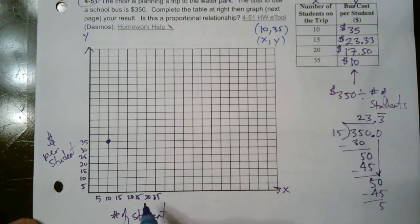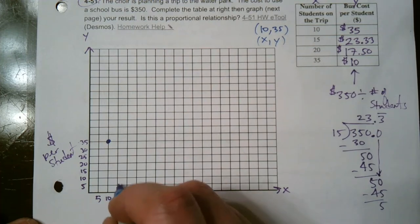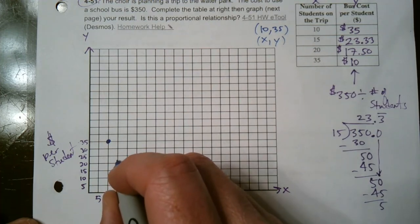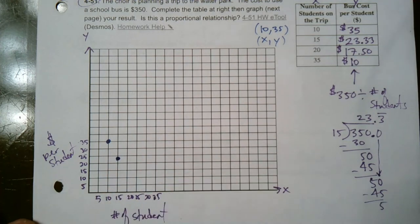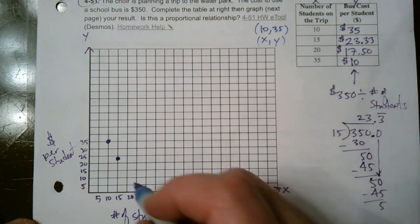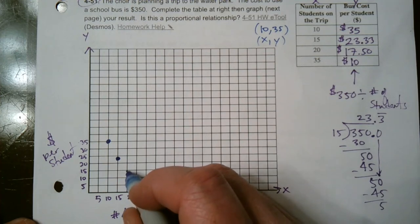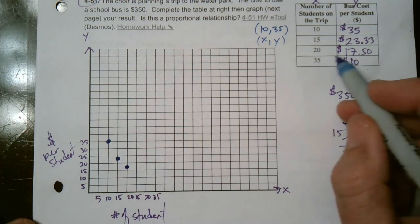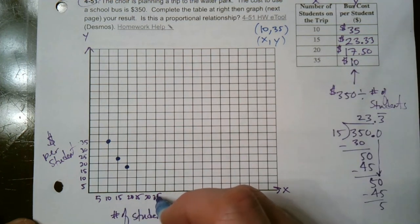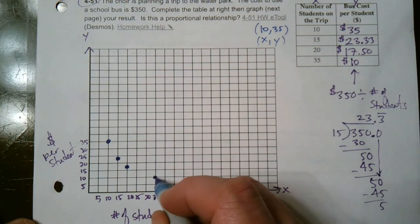So then what about 15, 23.33? So 15 and then 20, there's 25, there's 20. So 23.33 would be maybe right about there. We'll estimate. At 20, it's 17.50. So here's 15, here's 20, 17.50 just happens to be right in between them. And then 35, at 35, it's 10. So there's that point.